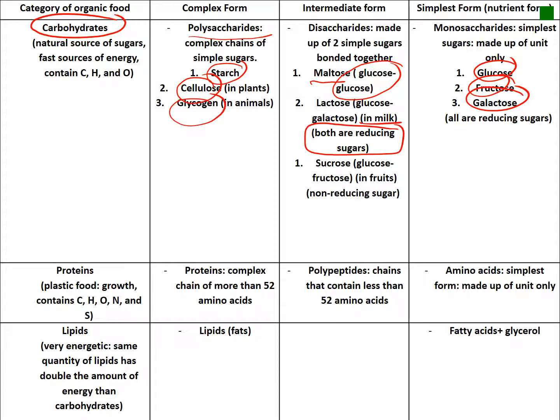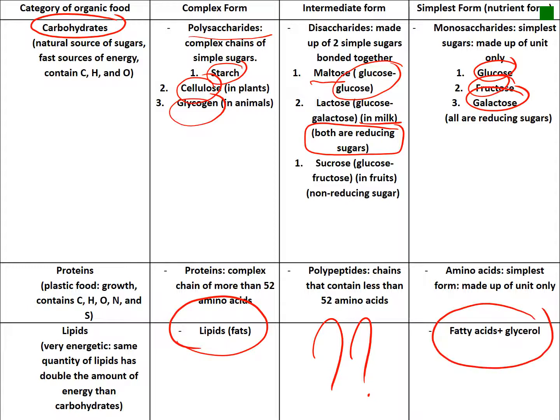The simplest form of carbohydrates consists of single units: glucose, fructose, and galactose — all are reducing sugars. Proteins are called plastic food and are responsible for growth. Their complex form is a chain of more than 52 amino acids; a polypeptide contains fewer than 52 amino acids; and the simplest form is individual amino acids. Lipids are very energetic — they can supply double the energy of carbohydrates.